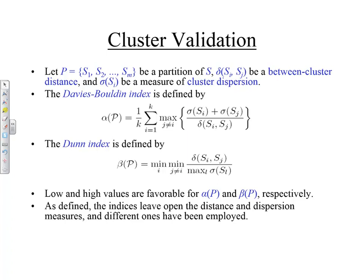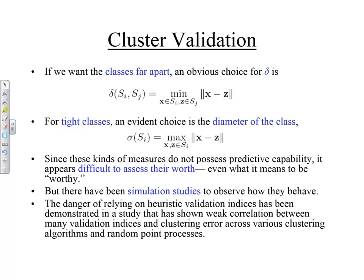The other index is called the Dunn index. If you apply the same logic, you want the sigmas to be small — the dispersion in the cluster to be small — and the between-cluster distances to be large, so this quantity should be large. You can pick anything you like for these sigmas and delta. If you want clusters that are far apart, you would probably choose for delta the minimum distance — the distance between the closest elements in the two clusters. For tight clusters, you might choose the diameter of the class as the measure of dispersion, which is the maximum spread among the elements.